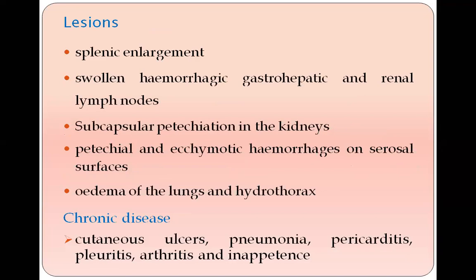Lesions of acute disease include enlargement of the spleen, and hemorrhagic gastro-hepatic and renal lymph nodes. Subcapsular petechiae are seen in the kidneys, and hemorrhages are also seen on serosal surfaces. Edema of the lungs and hydrothorax develop. Chronic disease is manifested as cutaneous ulcers, pneumonia, pericarditis, pleuritis, arthritis, and inappetence.